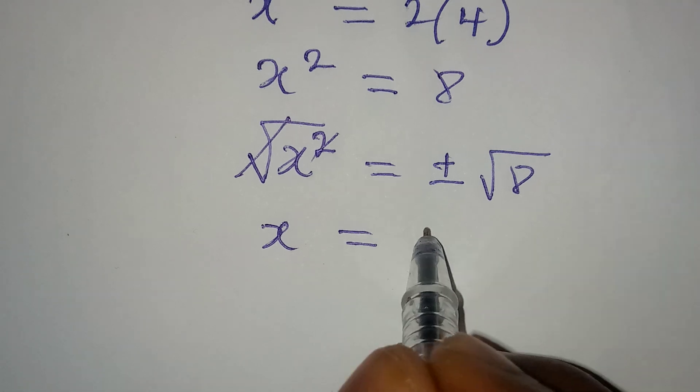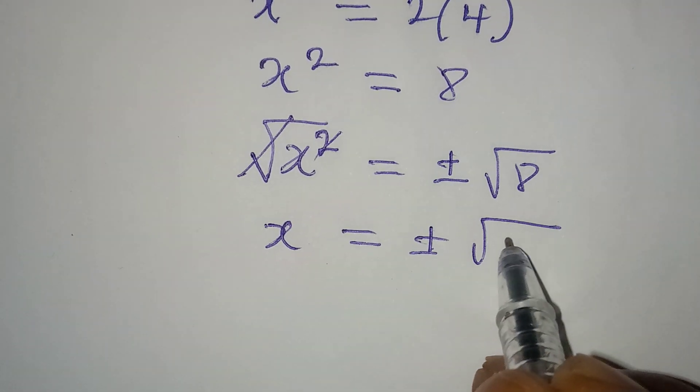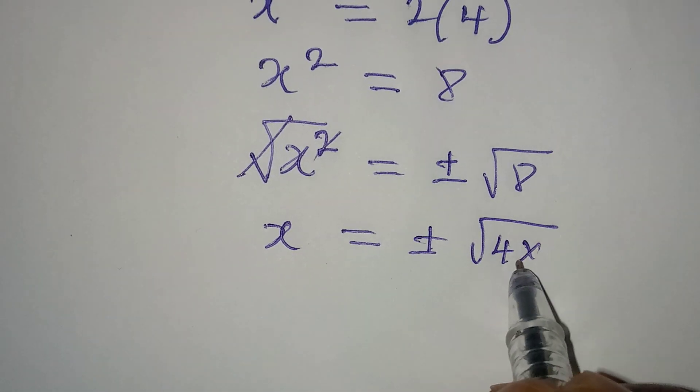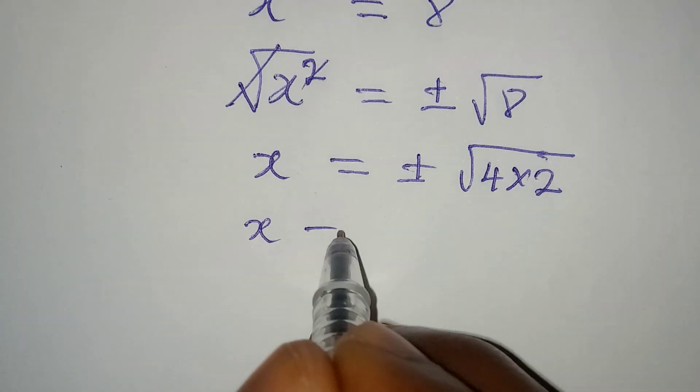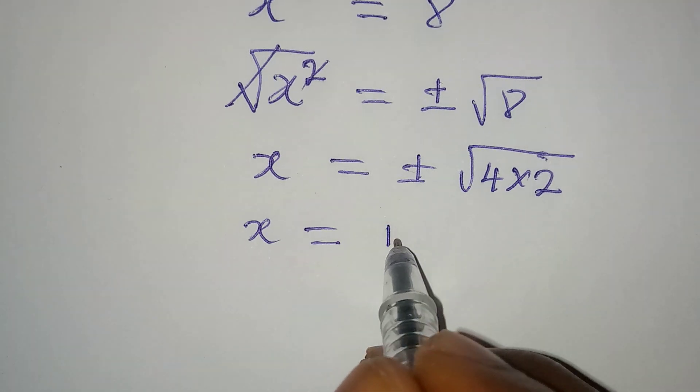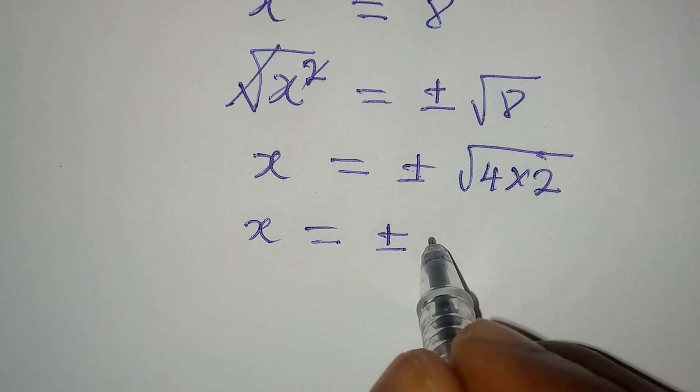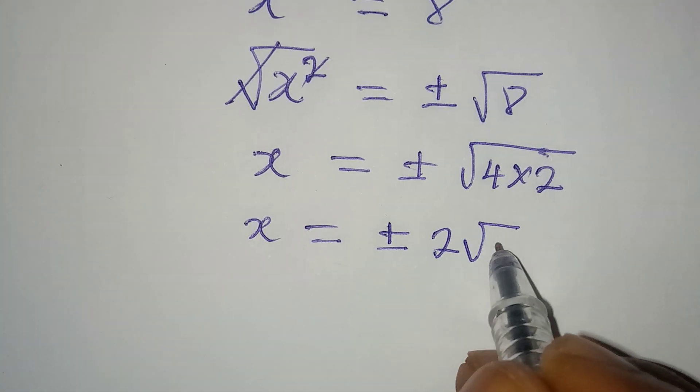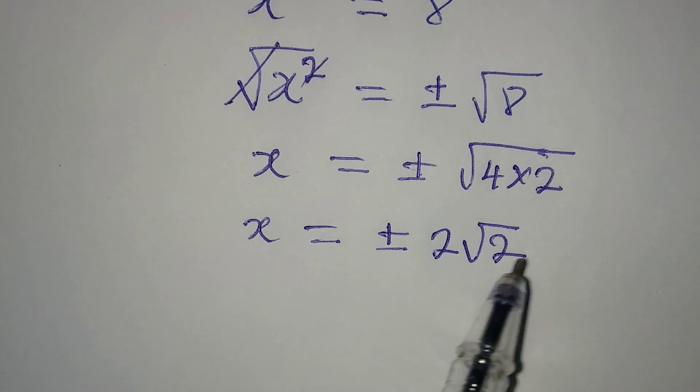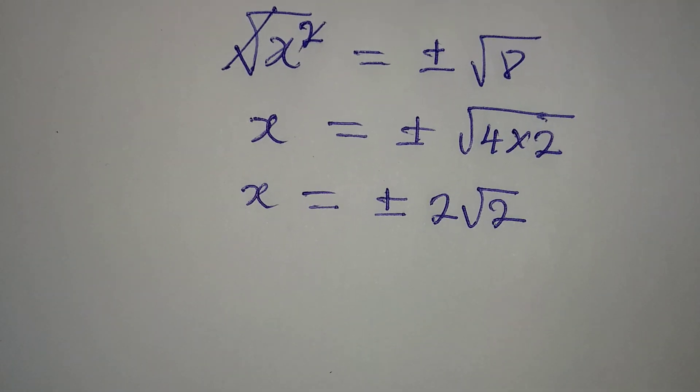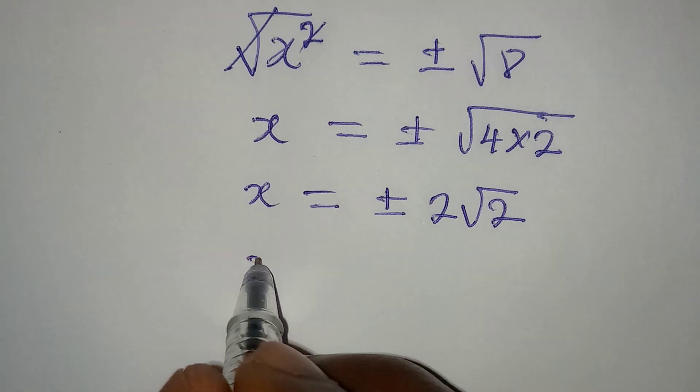X will be equal to plus or minus square root of 4 times 2, because 8 is 4 times 2. Now X will be equal to plus or minus 2 root 2, because square root of 4 is 2 and then these two will still appear in the root.